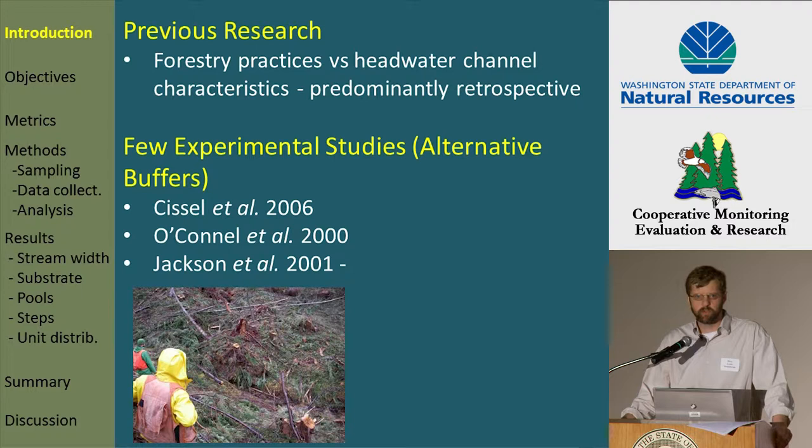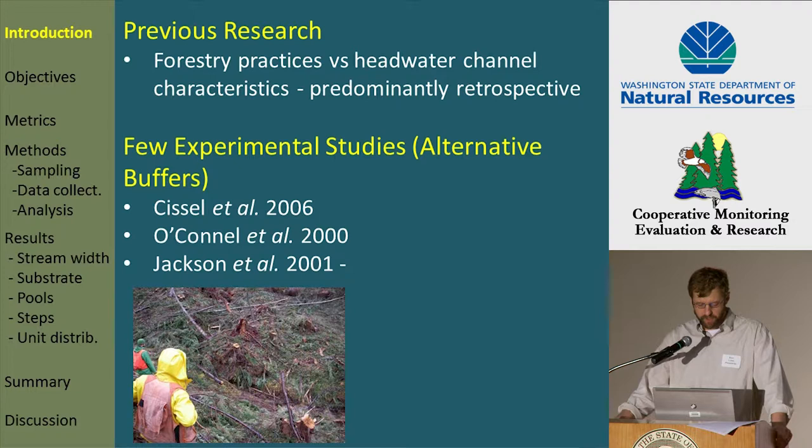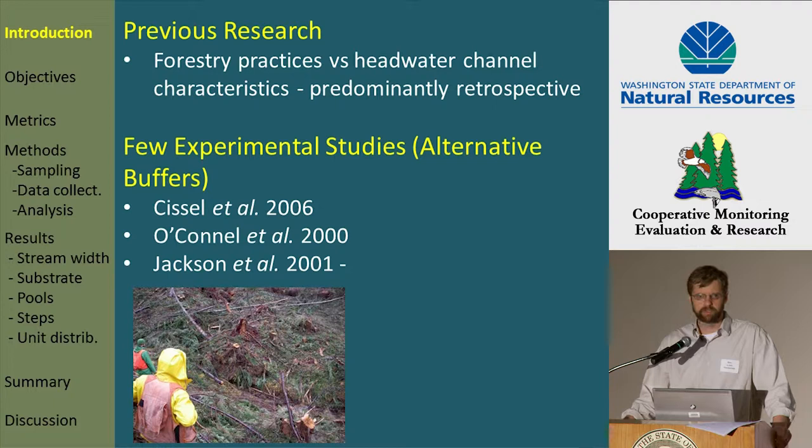The few examples we do have of experimental studies with alternative buffers — the CISL study, which was a BLM density management study in Oregon, the O'Connell and others study, and the old timber fish and wildlife study that took place in this area — those first two studies did not include complete harvest all the way to the stream edge. That's an important distinction to make between those studies and this one.